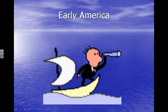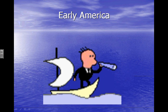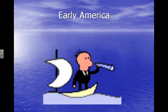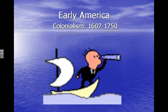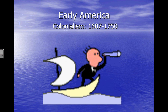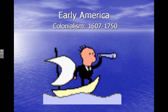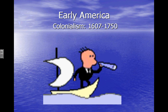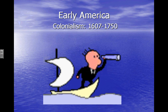Welcome to the very first History of American Lit lecture. We're going to start with early America — we're going to call that colonialism. We're going to start at about 1607 when the Jamestown settlers first landed and go to roughly 1750. These are rather arbitrary dates, but we have to work within some parameters.